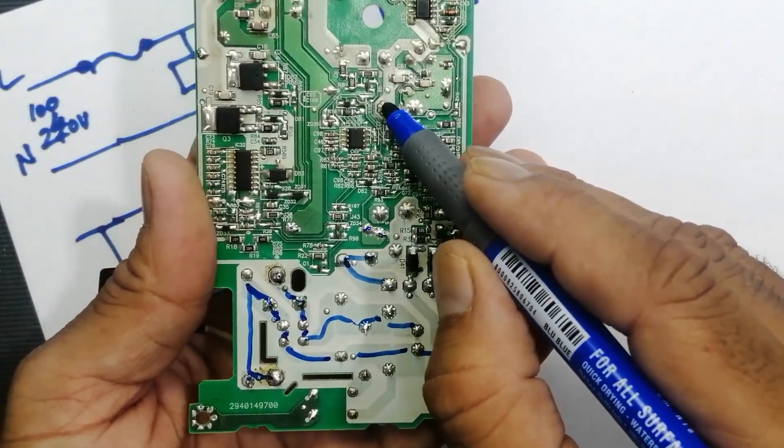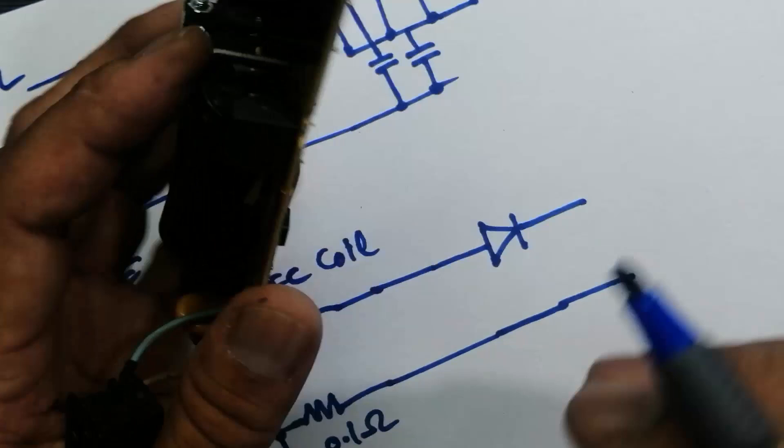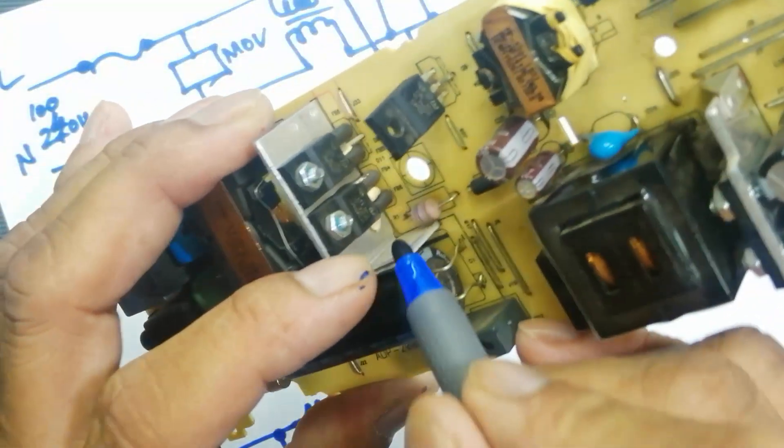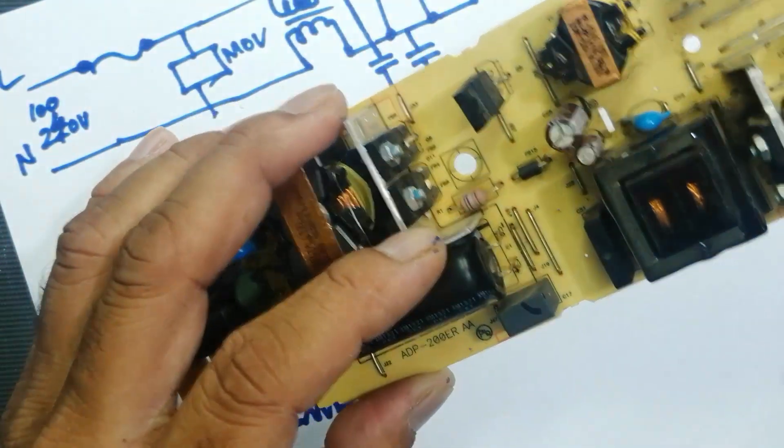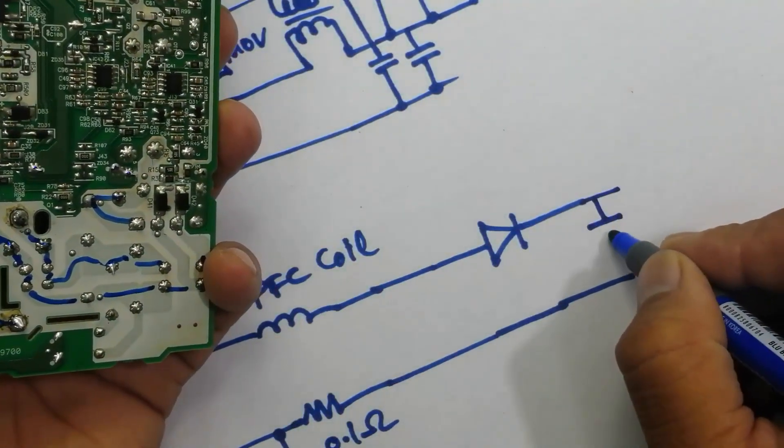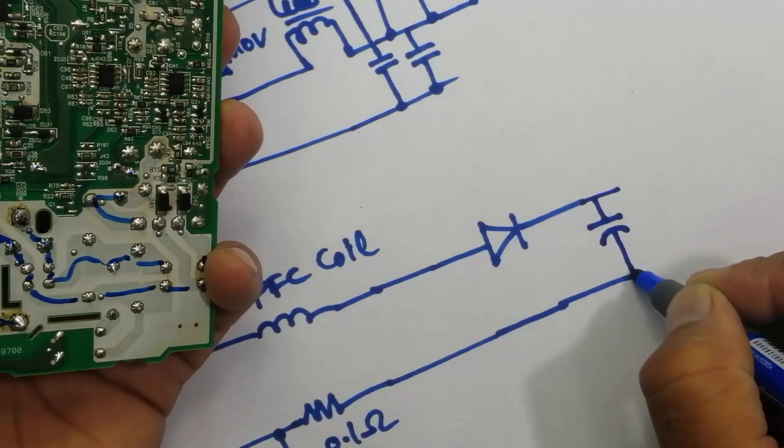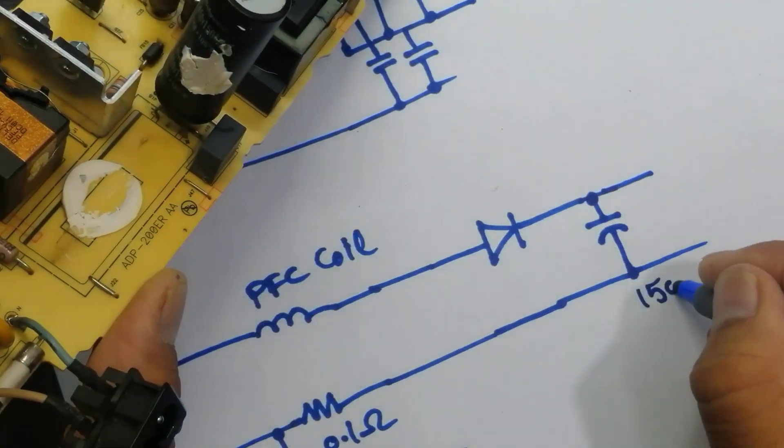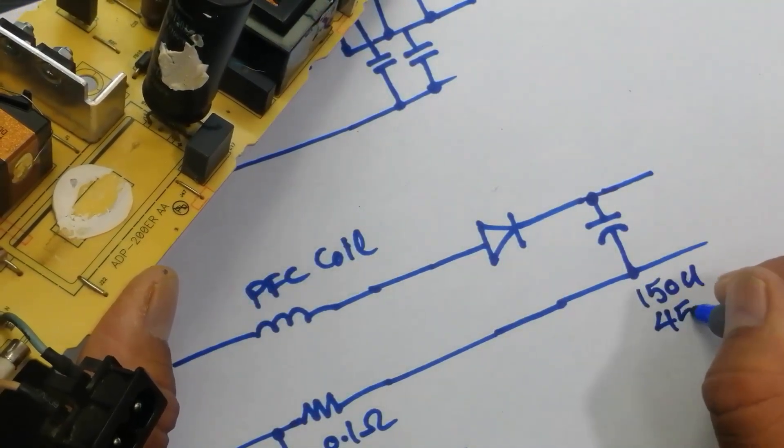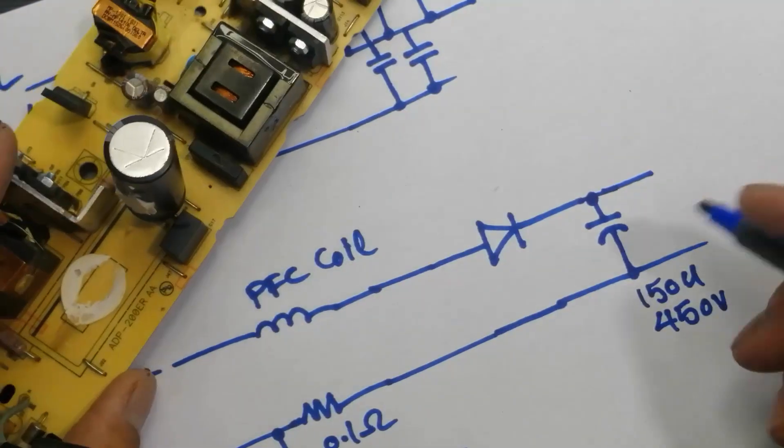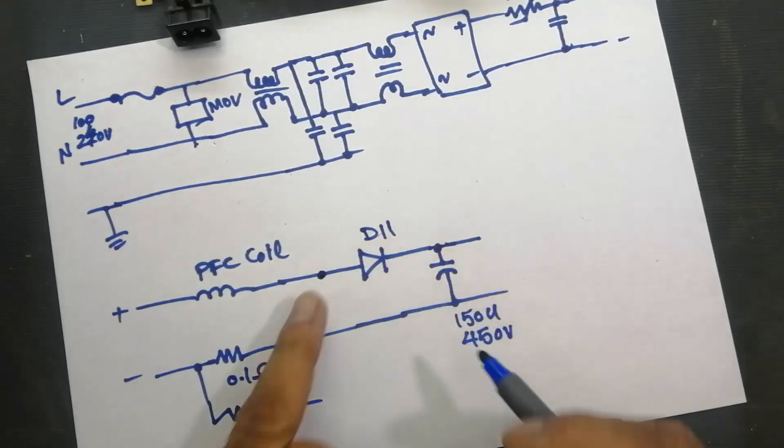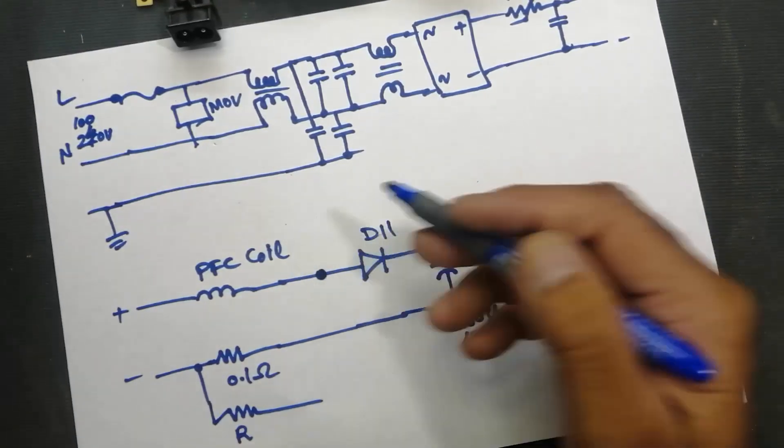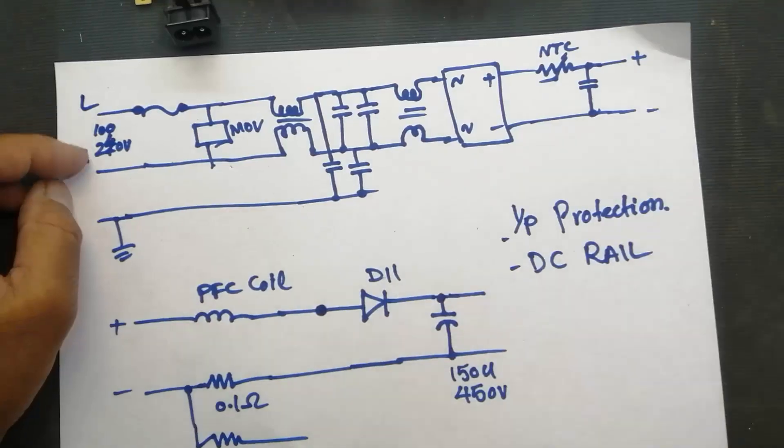So negative line from here, jumper, 0.1 ohm resistor to the capacitor. But positive line from here, NTC, PFC coil choke, this point. And here we have a rectifier diode, this point. And then we have bulk capacitor, 150 microfarad, 450 volt. And from this point we have another node, this is called PFC. I am not discussing this point now, this circuit.